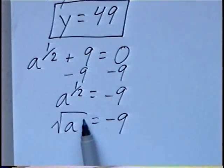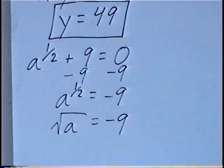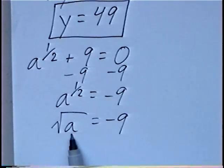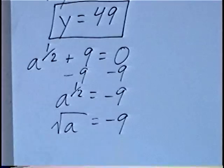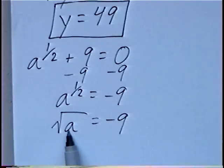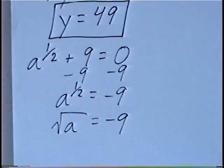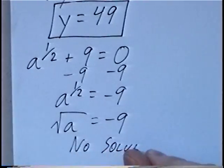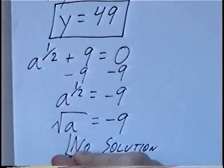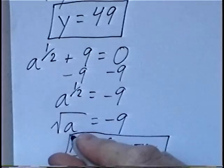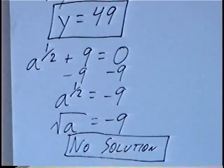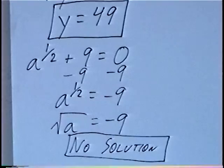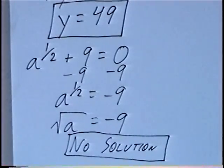From here, we could square both sides. However, keep in mind that square roots or radicals of an integer — a — has to be a positive number. If we ever have a square root equal to a negative number, this would be no solution. Any time you have a square root equal to a negative number, a square root always has to be positive, so that would be no solution.